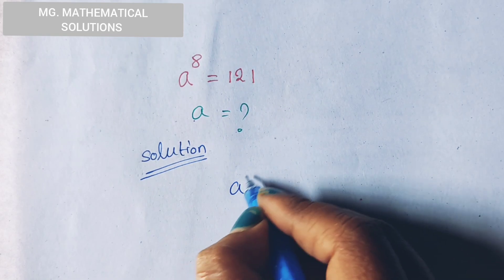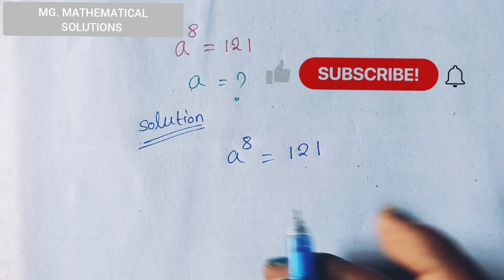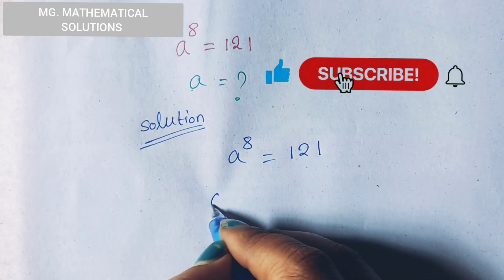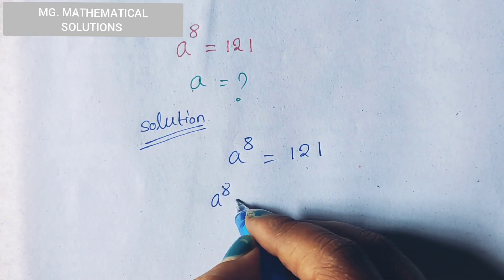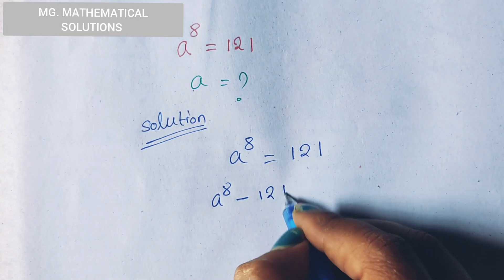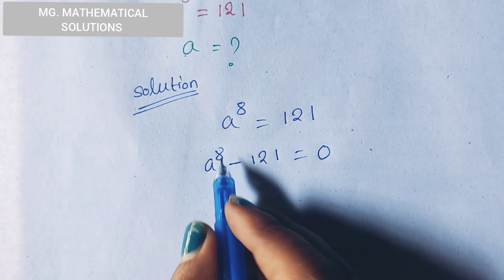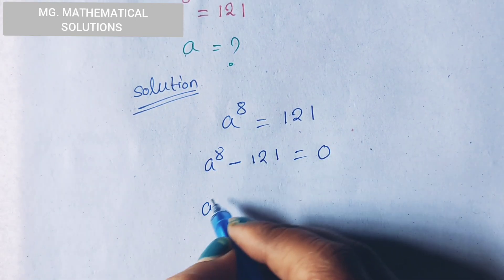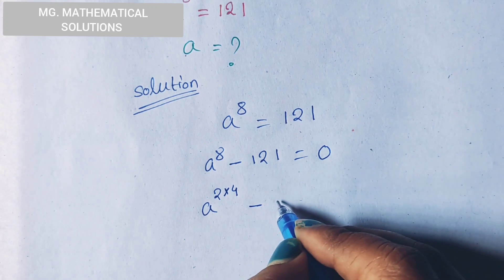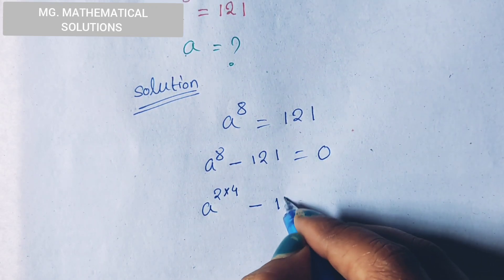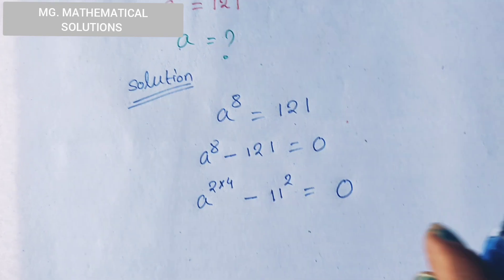The given equation is a to the power 8 equal to 121. We can write the left side minus 121 equal to 0. A to the power 8 we can write as 2 times 4, minus 121, which we can write as 11 to the power 2, equal to 0.